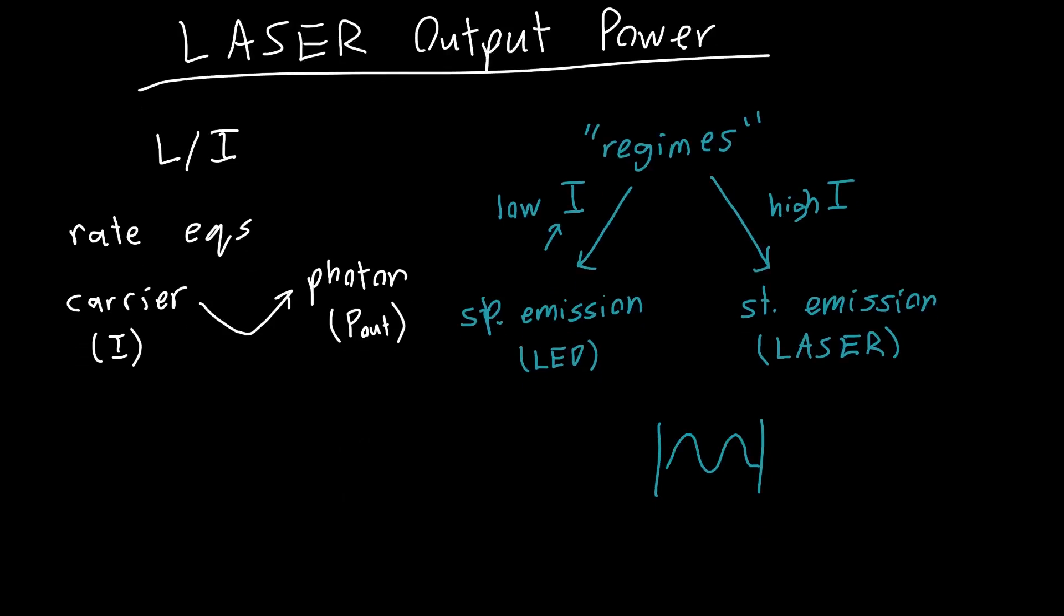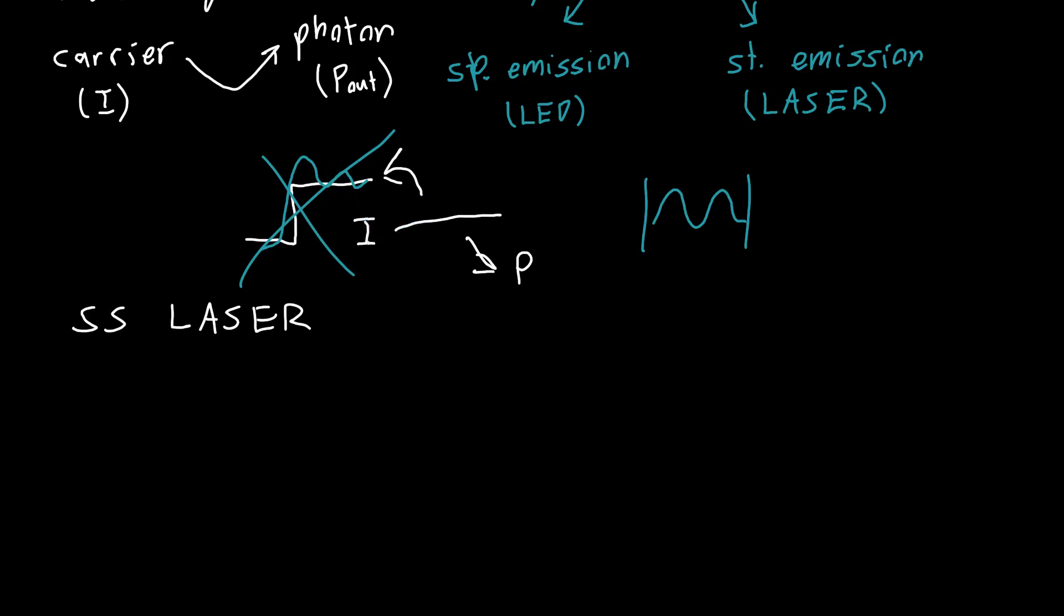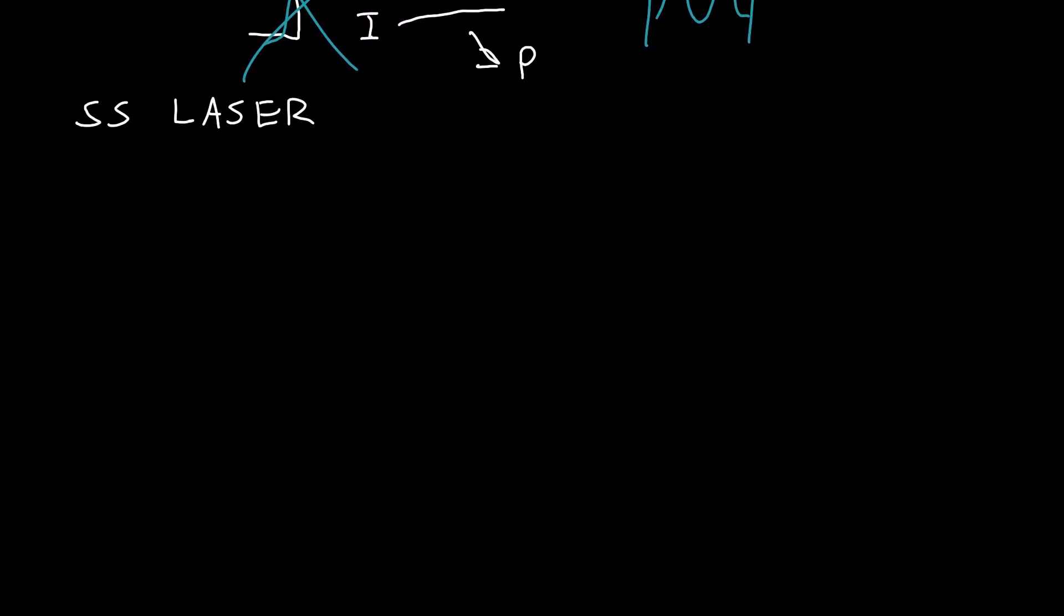So first, let's start with our carrier rate equation. And let's say that for now, we're just interested in the steady state laser operation. So we're not interested in if we apply, for example, a step function of current, how the laser responds transiently to that. For now, we're only interested in if we apply some constant current, some current that's not a function of time. What is our output power? And once we know this, we can generalize to a case where we've got transiently applied signals.